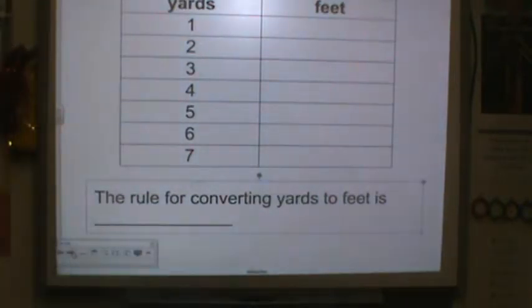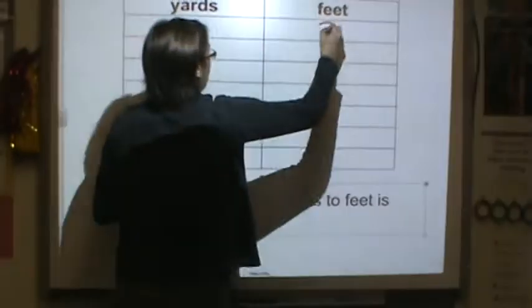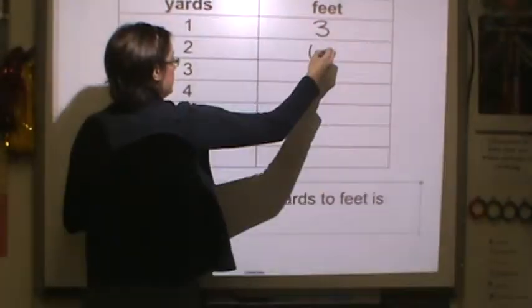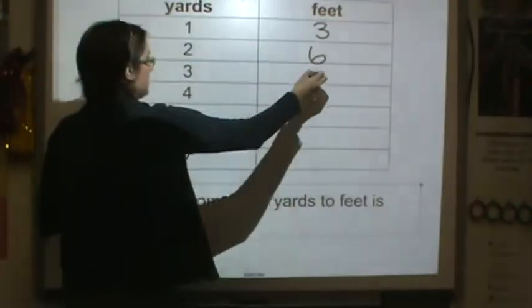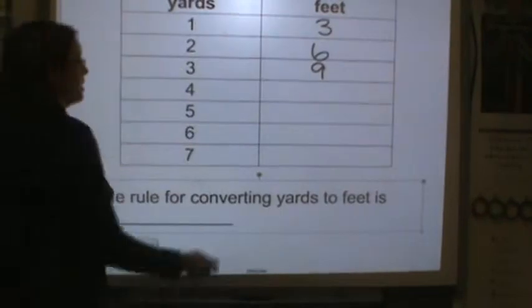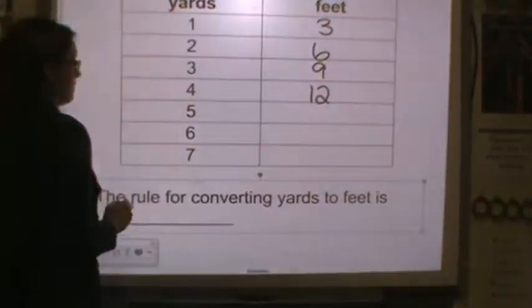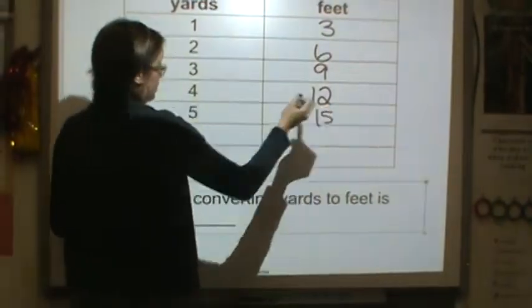All right yards to feet. In your notes you saw that there are three feet in a yard. So one yard has three feet, two yards has six feet, three yards has nine feet, four yards has 12 feet, five yards 15. I think you're seeing a pattern. Six yards is 18 and seven yards is 21.